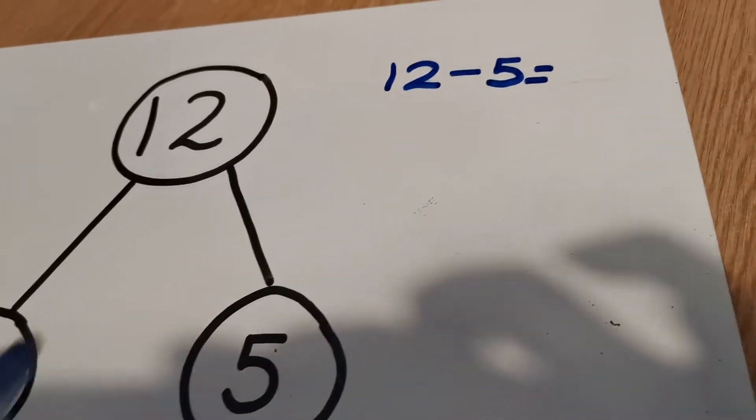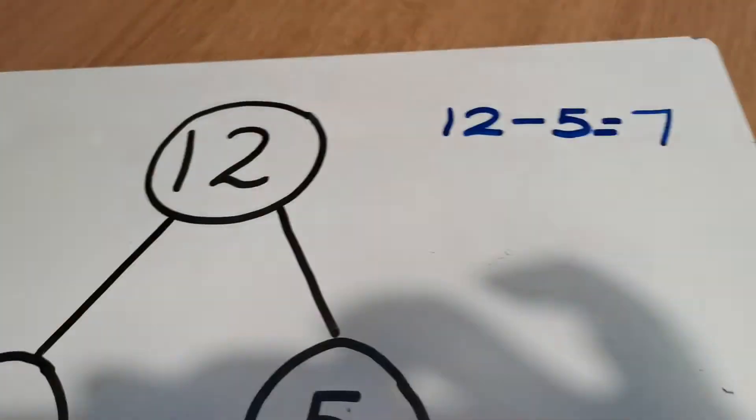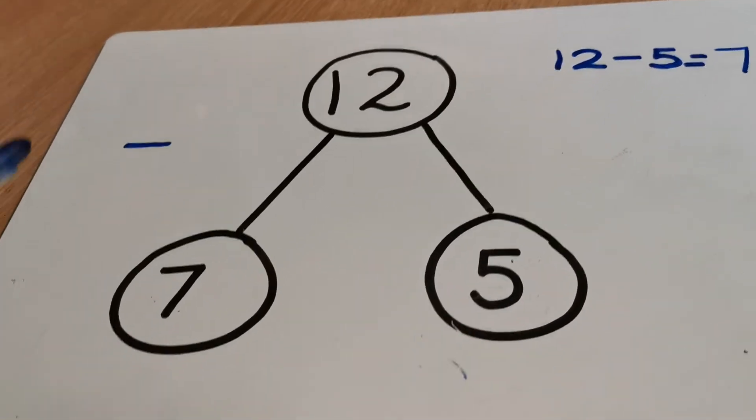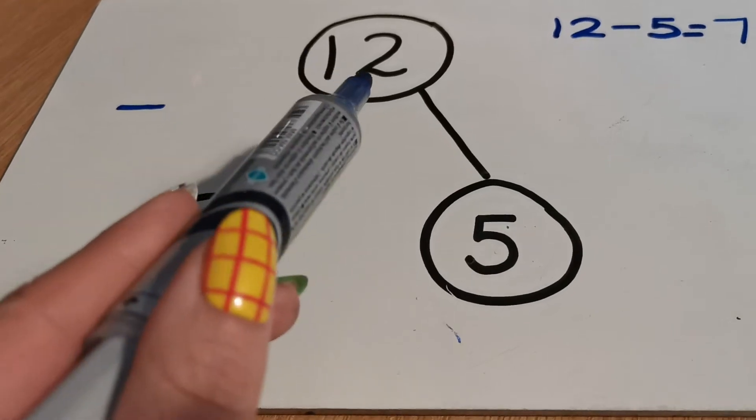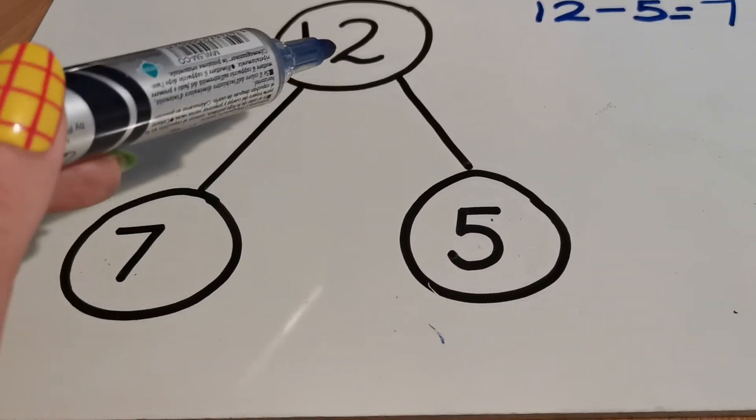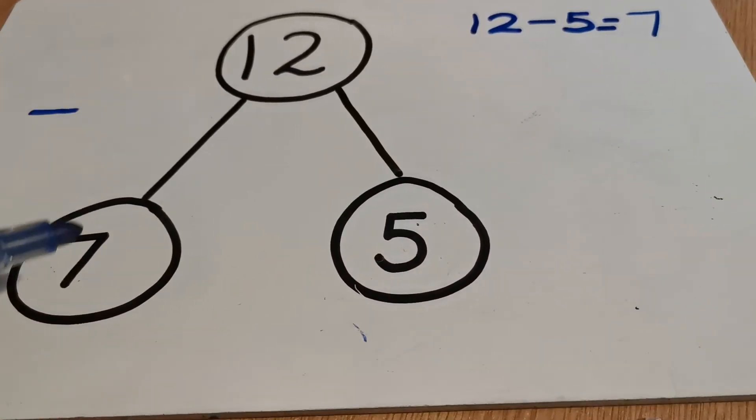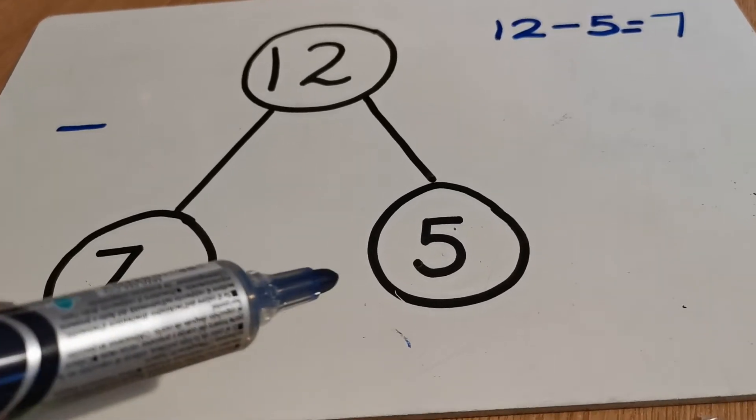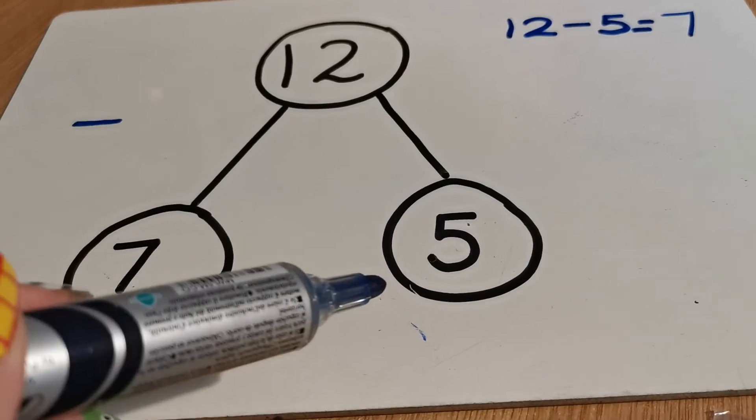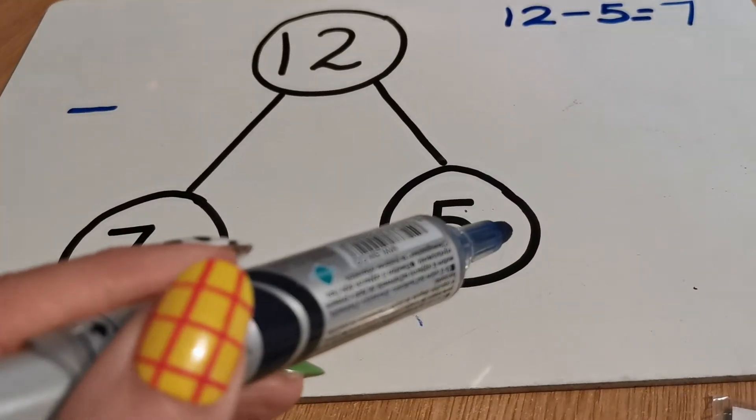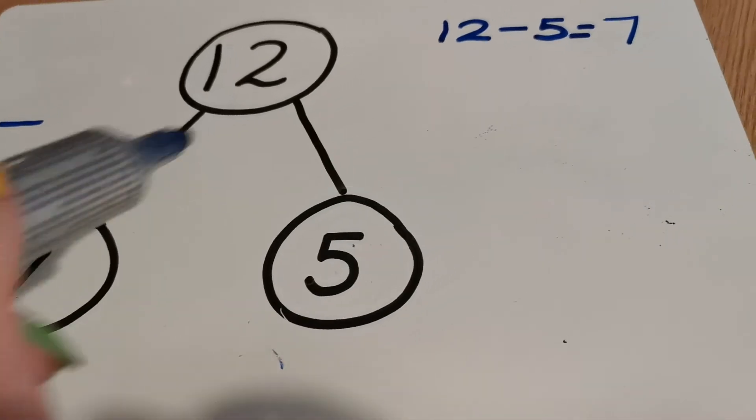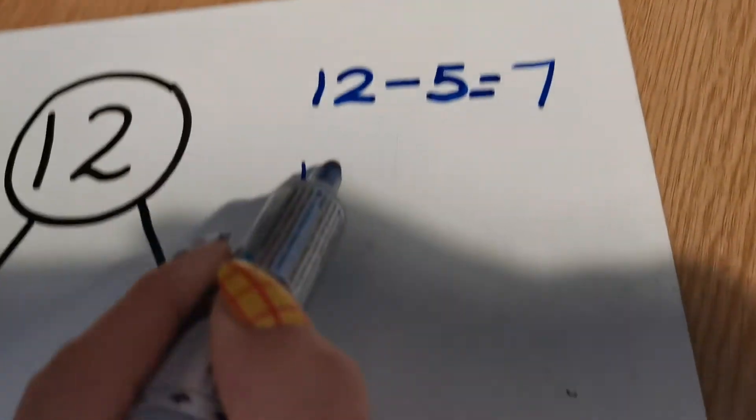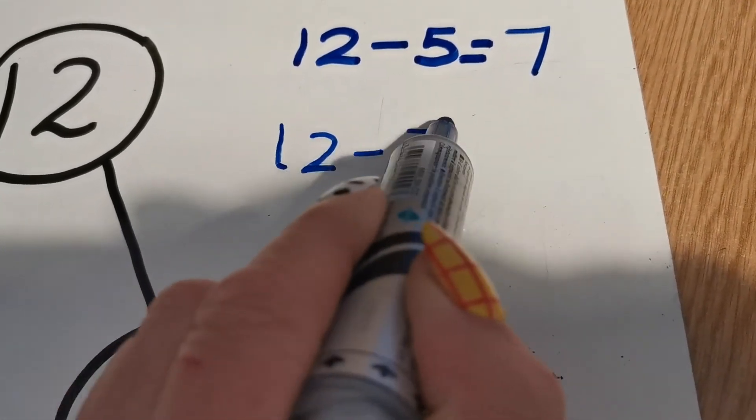You should have done because 12 take away 5 is 7. That's our part-whole model, isn't it? Okay, so I'm going to put 7 in there. Now I said we can't do a switcher like you can with addition by swapping these numbers around, but you can swap these numbers around. So this time I'm going to do 12 take away 7. What do you think I'm going to be left with?